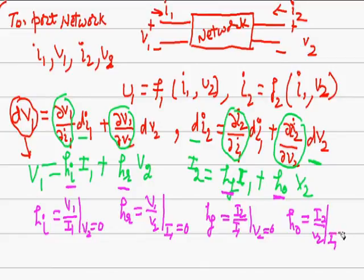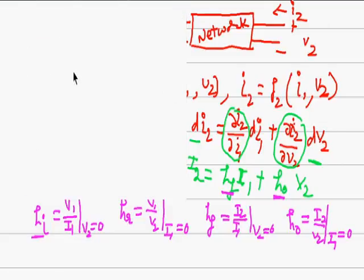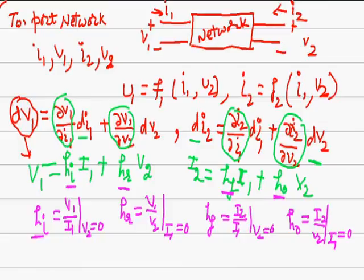HI is input impedance, HR is reverse voltage ratio, HF is forward current gain, HO is output admittance. These are the four H parameters.